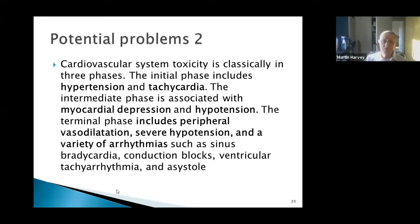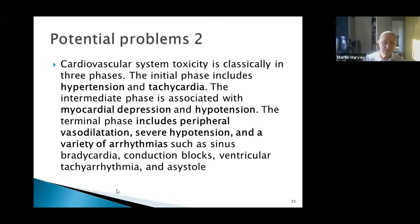Cardiovascular toxicity can occur in three phases. The initial phase includes hypertension and tachycardia. An intermediate phase involves myocardial depression with reduced cardiac output and hypotension - the blood pressure first spikes then drops. A terminal phase, which we hope to avoid, includes peripheral vasodilation, severe hypotension, various arrhythmias such as sinus bradycardia, conduction block, ventricular tachyarrhythmia, and ultimately asystole and death.